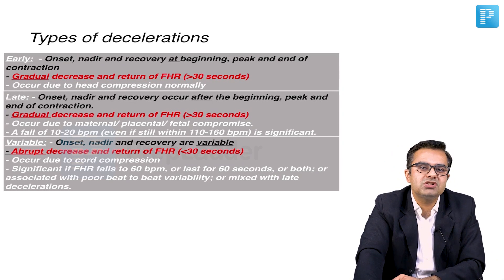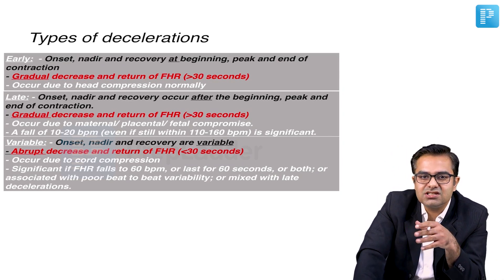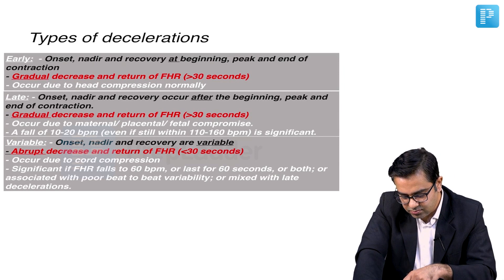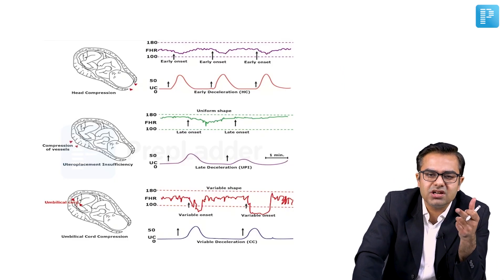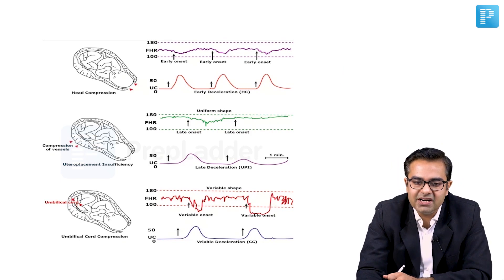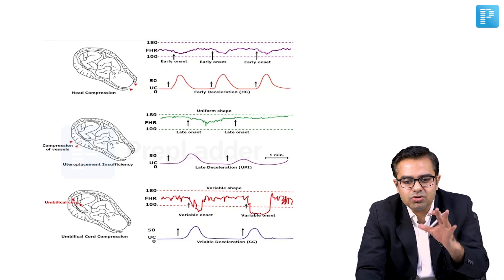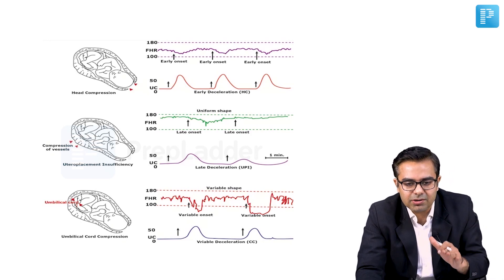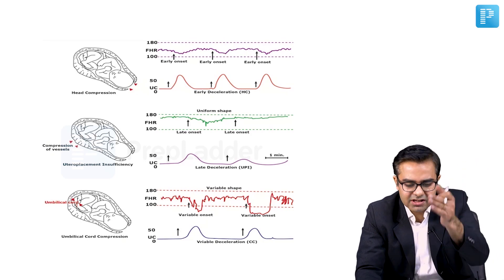The reason I am spending so much time on this is because questions are asked in almost every entrance exam regarding these points. Here a similar figure is also given in standard textbooks of pediatrics. You can see the shape is uniform for early and late, while for variable deceleration the shape is very unpredictable and the recovery time and fall are very sudden.